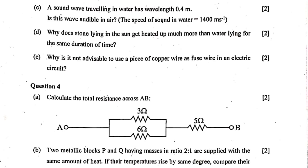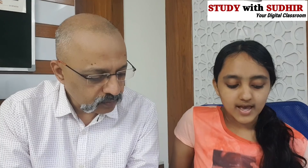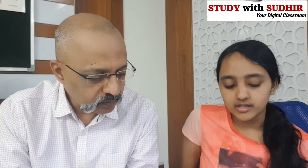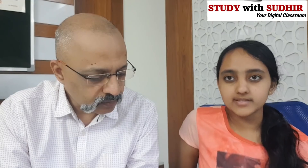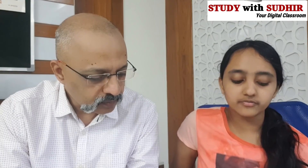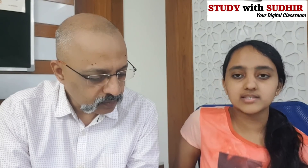Question 4a: Calculate the total resistance across AB. The circuit is a mix of series and parallel. Using 1/Rp = 1/R1 + 1/R2, you get Rp = 2 ohms. Then R_AB = Rp + R3 = 2 + 5 = 7 ohms.